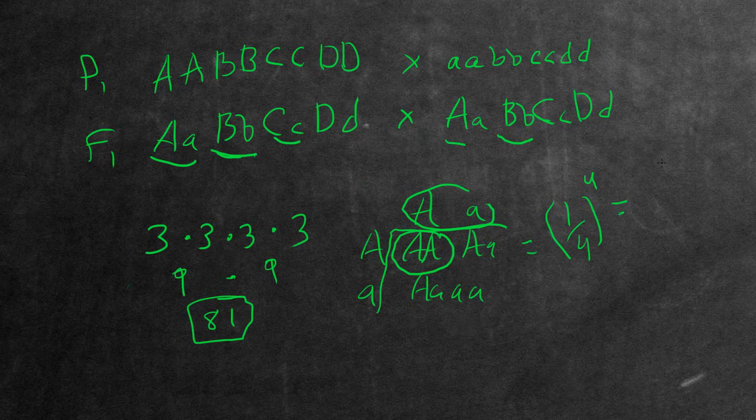So if you actually did the math here, it would be one over 256. That is the proportion of F2 that are actually going to be homozygous dominant for all of the genes.